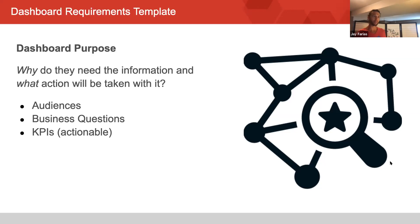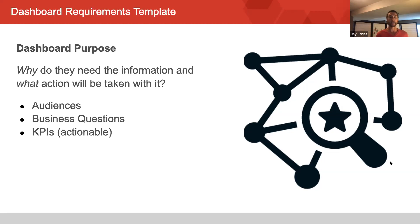The purpose section is the most important part. The main goal is understanding why they need the information and what action they will perform with it — what are they going to do with the dashboard? This will help you as a developer understand the true purpose and make sure the metrics and design align with that goal. Some sample questions we ask are: who are the audiences, what are their business questions, what KPIs answer those business questions, and are those KPIs actionable?